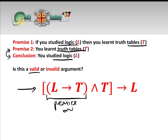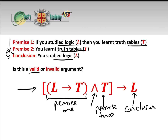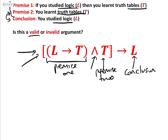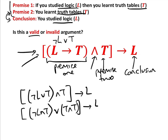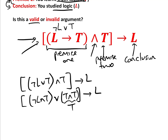Here we have premise 1: L implies T. We have to assume both premises are true. Premise 2 is T — you learned truth tables. Does that mean the conclusion L — that you must therefore have studied logic — follows? We rewrite L implies T as not L or T. So we have (not L or T) and T implies L. By the distributive law, that is (not L and T) or (T and T) implies L. Now T and T is clearly just T, so we have (not L and T) or T implies L. Since not L and T is a subset of T, by the absorption law, this simplifies to T implies L.